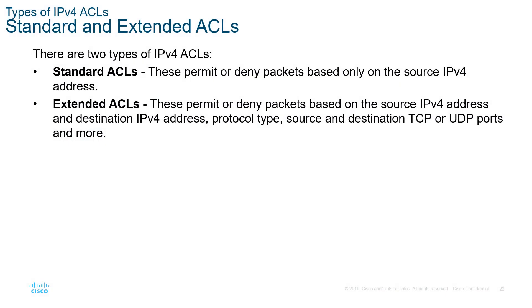Types of ACLs: the more common two IPv4 types are standard and extended, though there are more. Standard ACLs permit or deny based off the source only. Extended ACLs deny or permit based off the source, the destination, protocols, source and destination ports, and much more. For an exam, we typically look at the extended form. Cisco has two specific placement rules: standard ACLs do not look at the destination, so place them as close to the destination network as possible. Extended ACLs allow for source and destination, so place them as close to the source of the traffic as possible.